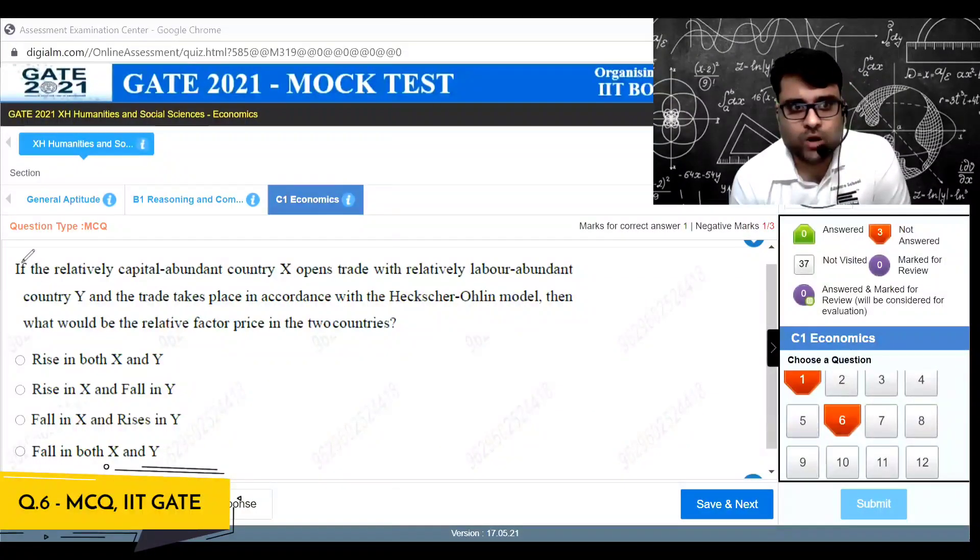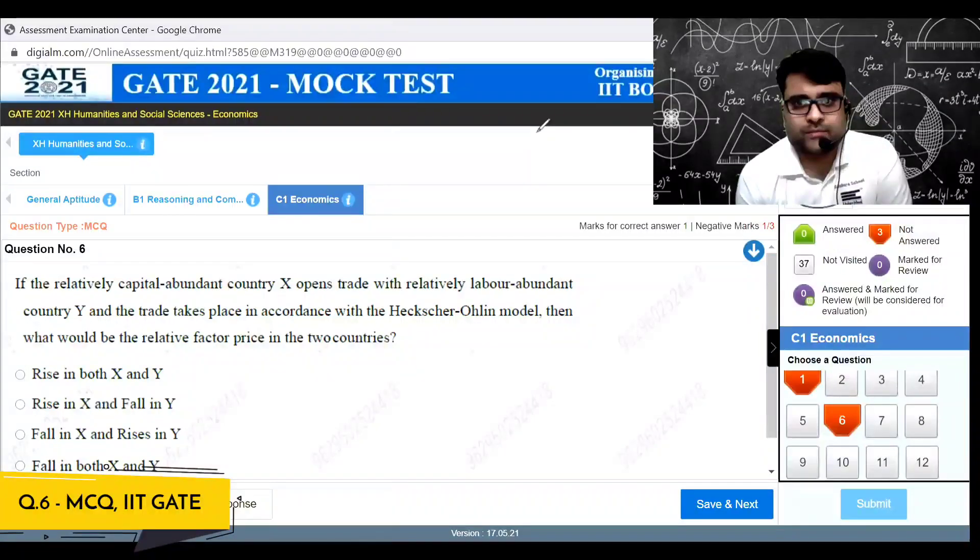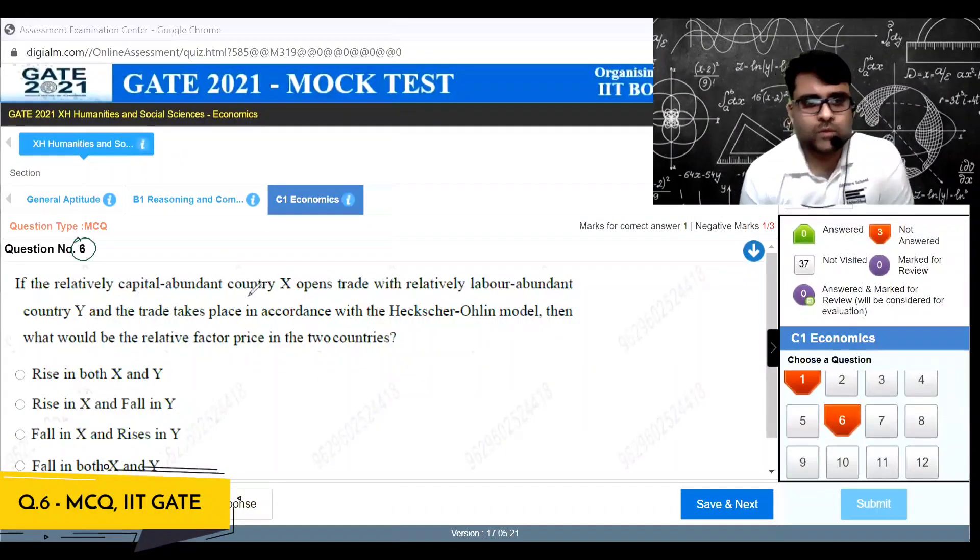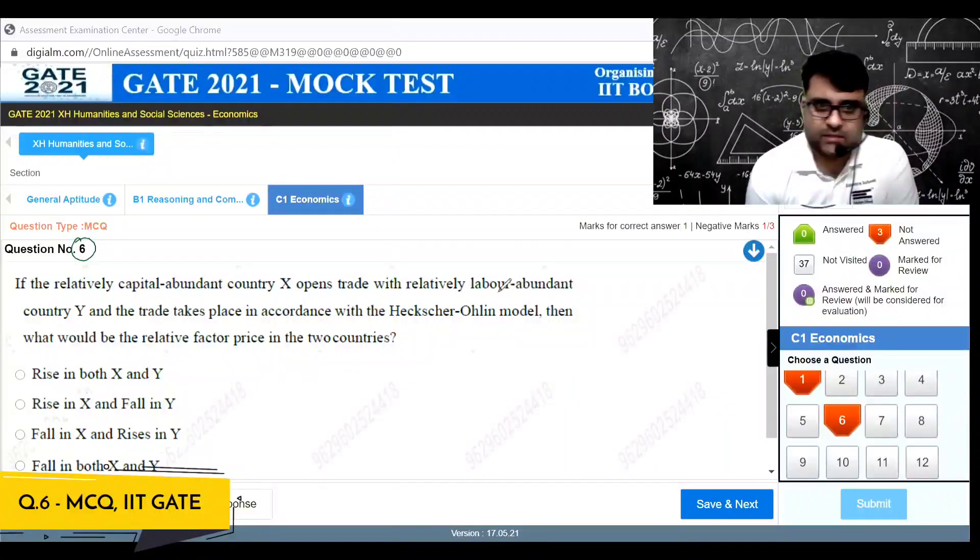Gate 2021 mock question number six. The relatively capital abundant country X opens trade with the relatively labor abundant country Y, and trade takes place in accordance with the Heckscher-Olin model. Then what would be the relative factor price in the two countries?